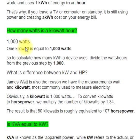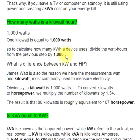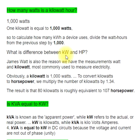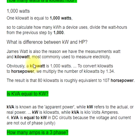How many watts is a kilowatt hour? 1000 watts. 1 kilowatt is equal to 1000 watts. So to calculate how many kWh a device uses, divide the watt-hours from the previous step by 1000.